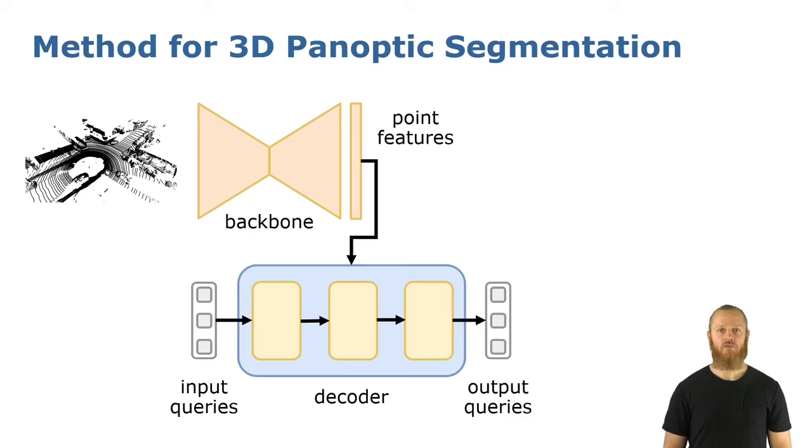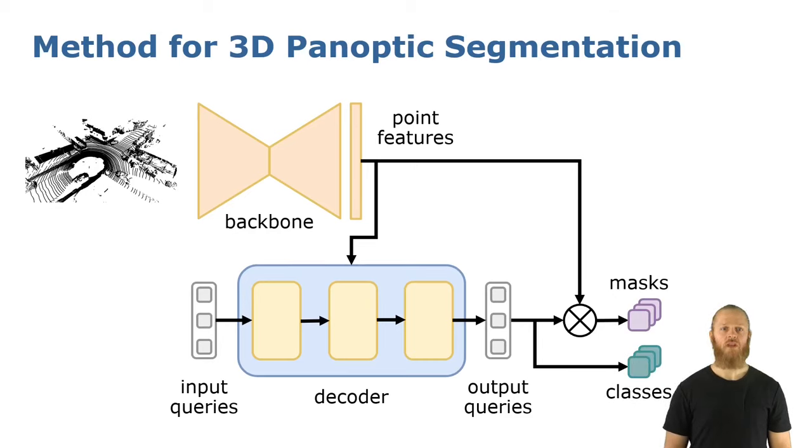After the refinement of these mask proposals, we obtain for each output query a binary mask and a semantic class, segmenting this way the whole scan. It's important to remember that in this context, the queries are learnable feature vectors, randomly initialized, but are also optimized during the training process. They act as mask proposals, representing a single mask.